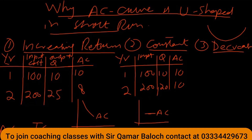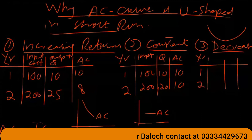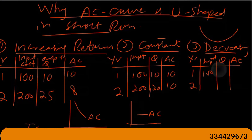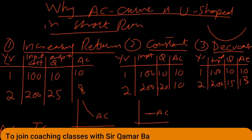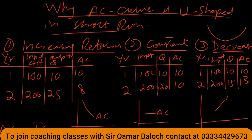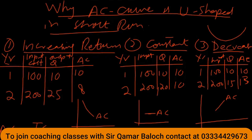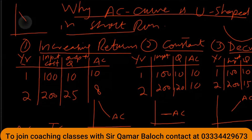In the case of decreasing or diminishing returns to scale, if we double input from $100 to $200, output increases by less than double — say to only 13.3 units — so average cost rises from $10 to about $15. Finally, combining increasing returns, constant returns, and decreasing returns gives us a U-shaped average cost curve: initially falling, then flat, then rising.